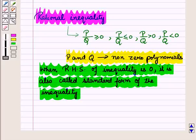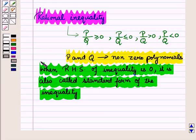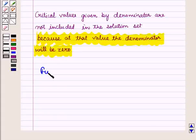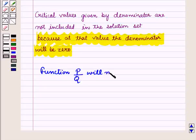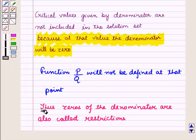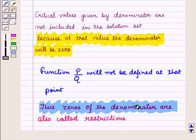Rational inequalities are solved in the same way as we solve quadratic inequalities. The only difference is in the critical numbers. We include zeros of the denominator in our list of critical values, but we do not include the critical values given by the denominator in the solution set, because at that value the denominator will be 0 and the function P upon Q will not be defined. Thus, zeros of the denominator are also called restrictions.